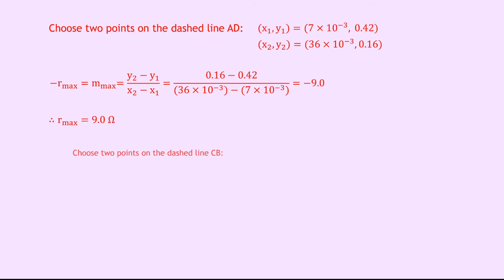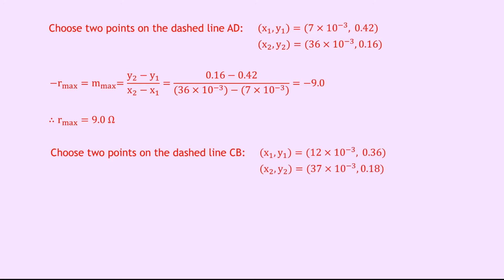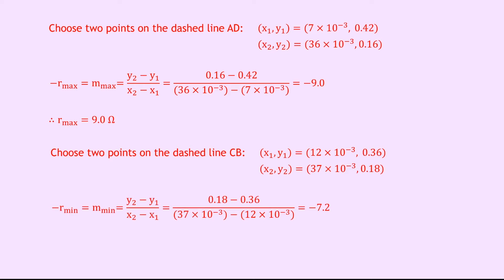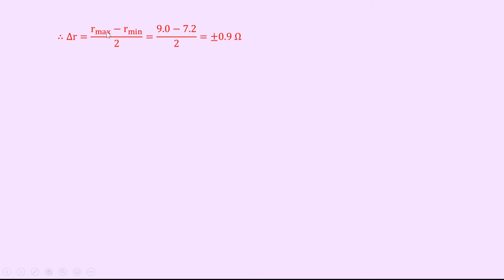For the minimum gradient, we use two points on the dashed line CB: (12×10⁻³, 0.36) and (37×10⁻³, 0.18). Using −R_min = m_min = (y₂ − y₁)/(x₂ − x₁), plugging in the numbers gives −7.2, so R_min = 7.2 ohms. The internal resistance can take a minimum value of 7.2 ohms and a maximum of 9.0 ohms. To find the uncertainty in R, we take (R_max − R_min)/2 = (9.0 − 7.2)/2 = plus or minus 0.9 ohms.